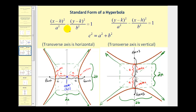This looks very similar to an ellipse but now we have a difference rather than a sum. When the x part of the equation is the positive part, the hyperbola will open left and right and we'll have a horizontal transverse axis. If the y part of the equation is positive, the transverse axis is vertical and the hyperbola will open up and down. Note that a squared will always be under the positive part of the equation and b squared under the negative part.